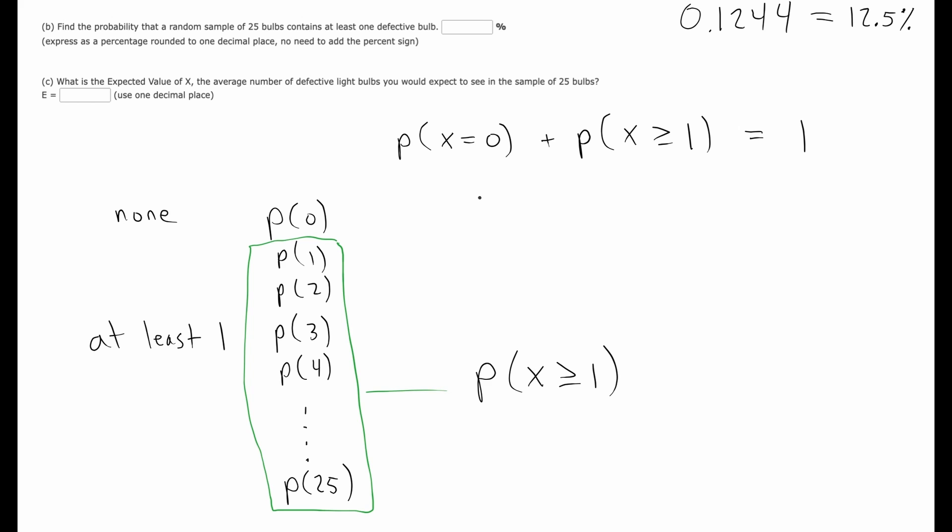We could just plug in our chance of getting none that we had found earlier and then leave this as an unknown probability. So if we just solve by subtracting, we get the probability very easily that way.